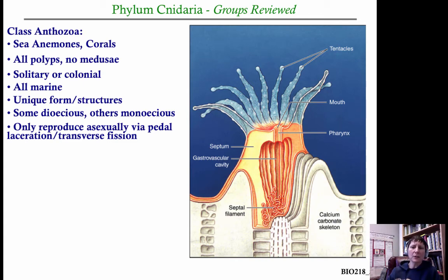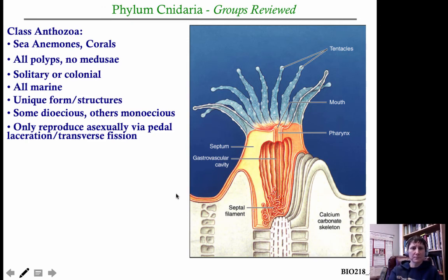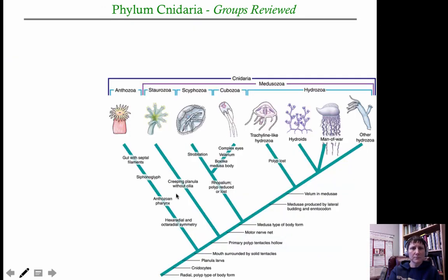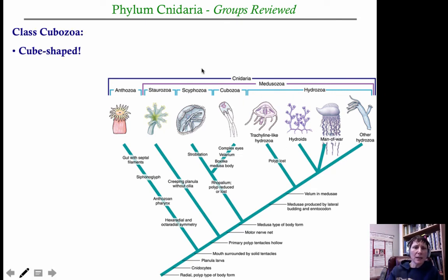Corals are basically sea anemones that happen to exude a calcium carbonate skeleton. You can see it here — here's a typical sea anemone sitting in the base that it actually exudes season after season, with all the same major structures.